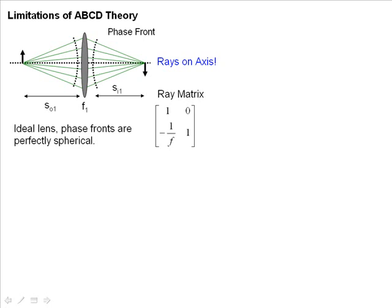But you have to remember there are some limitations of ABCD theory, and I'm going to go over this again. We've seen it before, so you can stop right here if you remember this. But if you don't, it's probably worth reviewing. Remember that the ABCD matrix theory, or the ray matrix theory, is defined for an ideal lens with phase fronts that are perfectly spherical. So the ray matrix for this ideal lens is that.